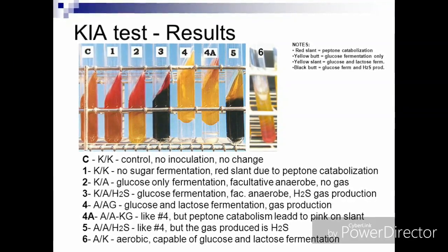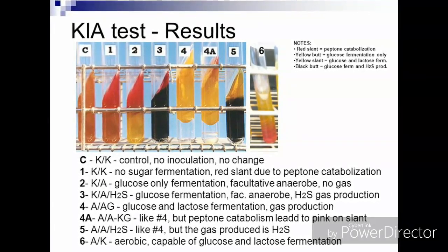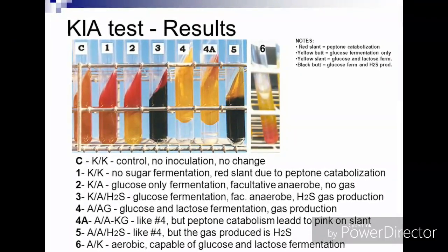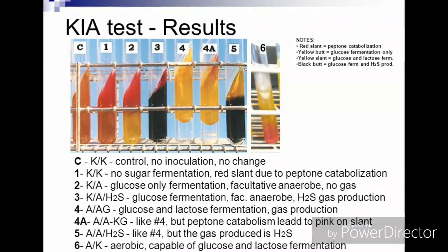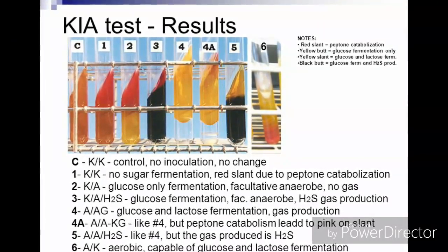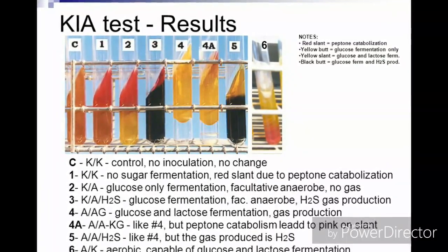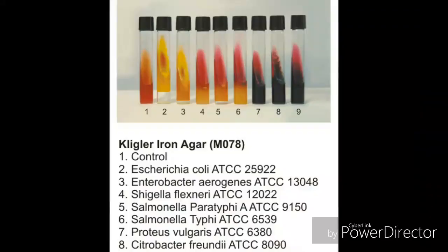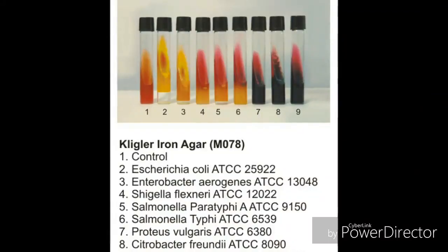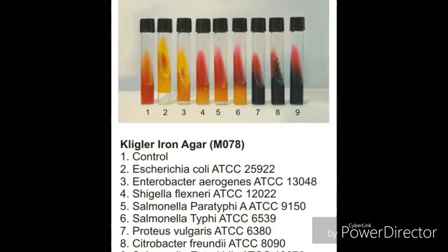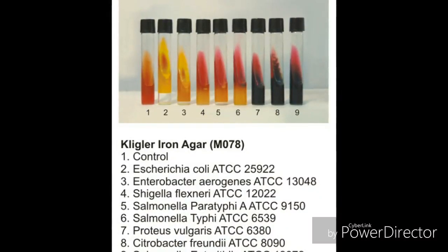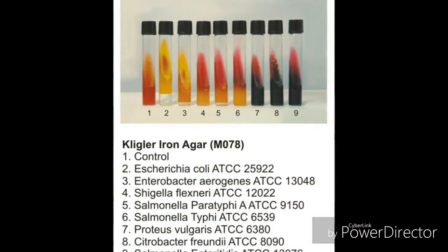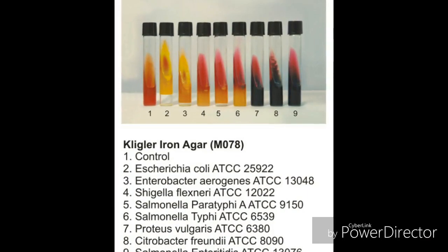In this test it is very important to have a clear knowledge about the KIA pattern, so we can identify the correct organisms. We have to identify whether the organism is a lactose fermenter or a glucose fermenter, whether it is producing gas, or whether it is producing H2S.